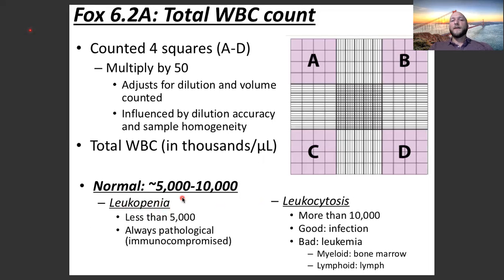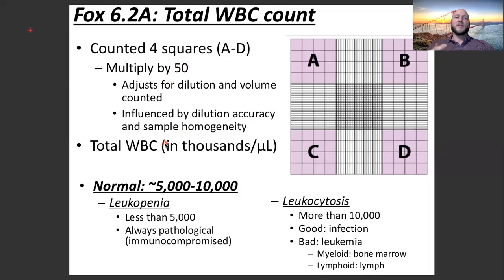For example, if you counted X white cells in areas A, B, C, and D, calculated the total white cell count, multiplied by 50, and it came out to 4,000 per microliter, I could ask on the quiz: what is the terminology used to describe this? The answer would be leukopenia — less than 5,000 per microliter.